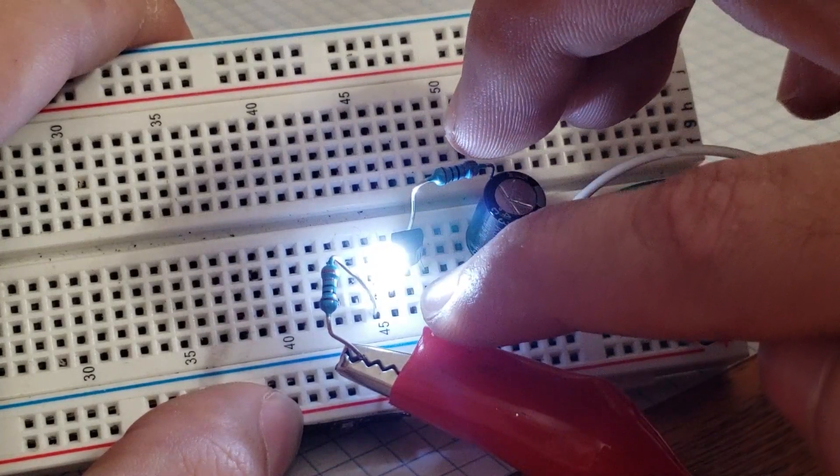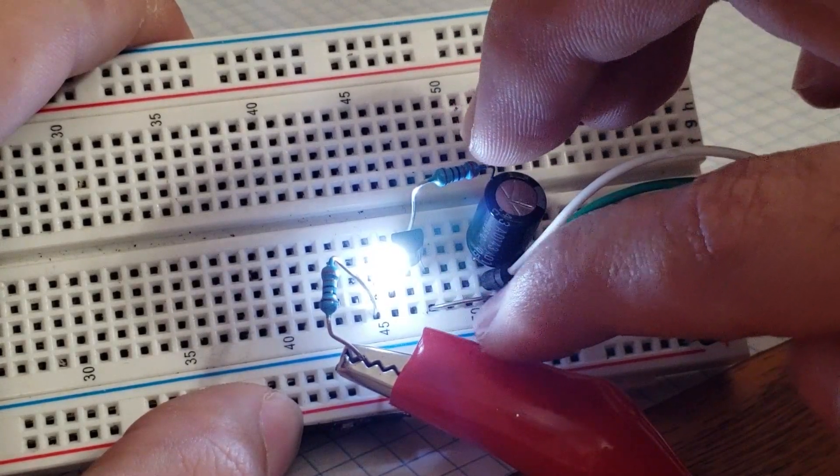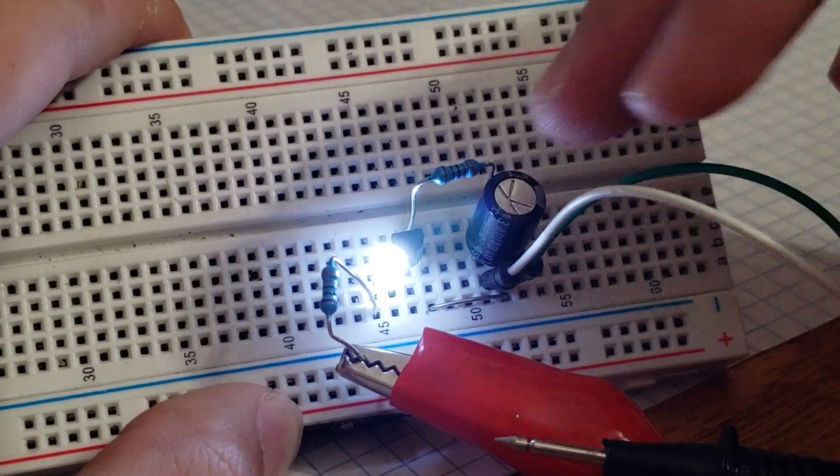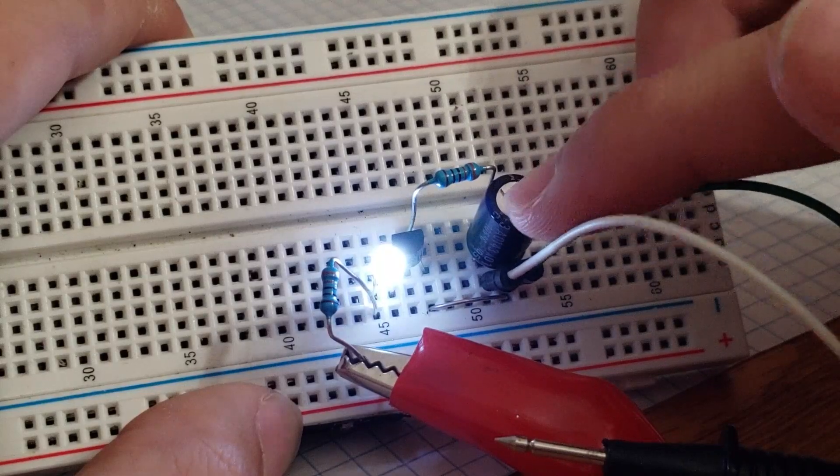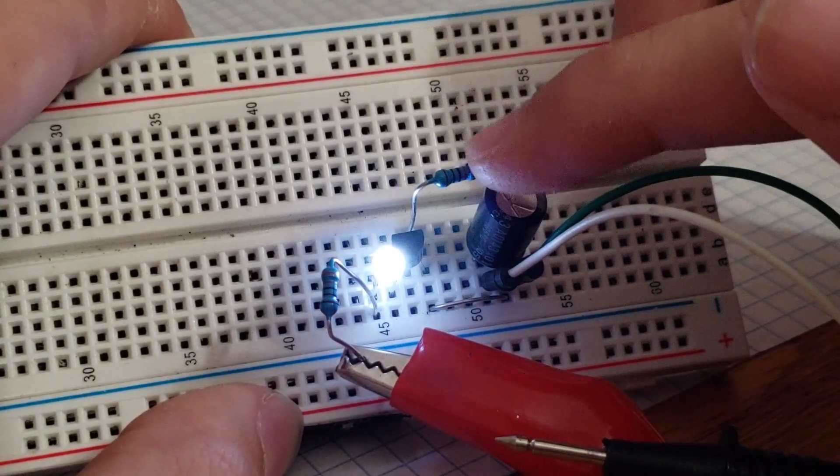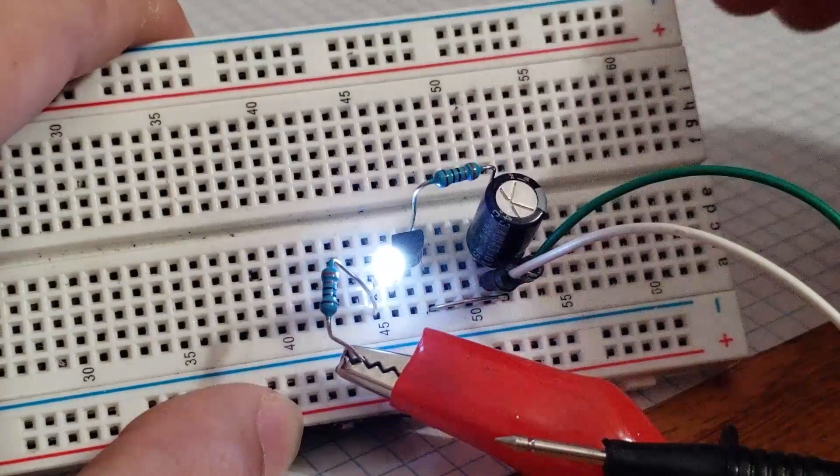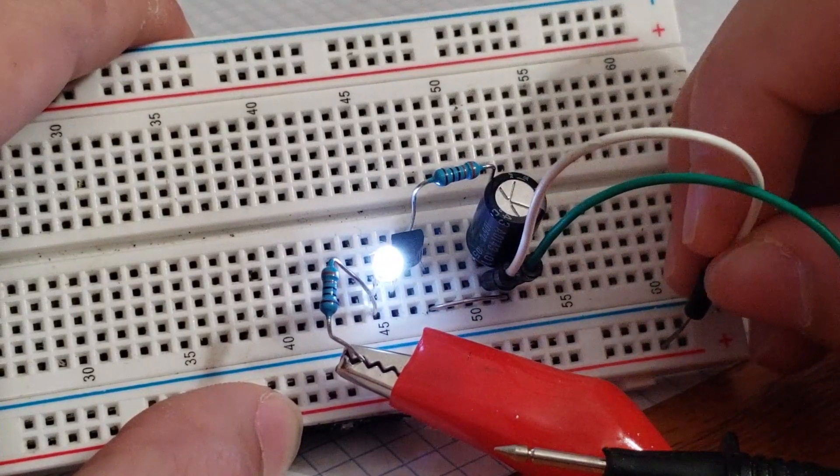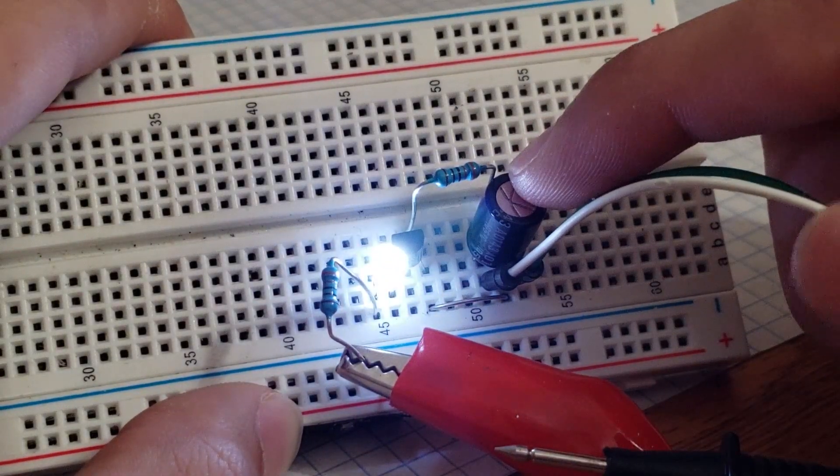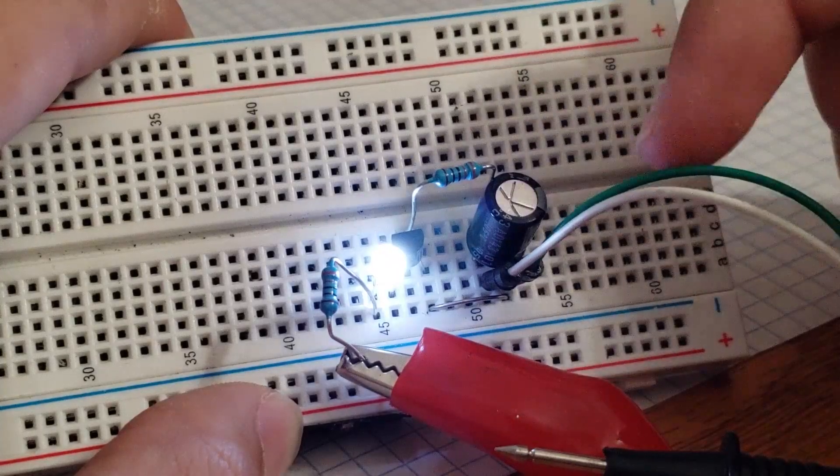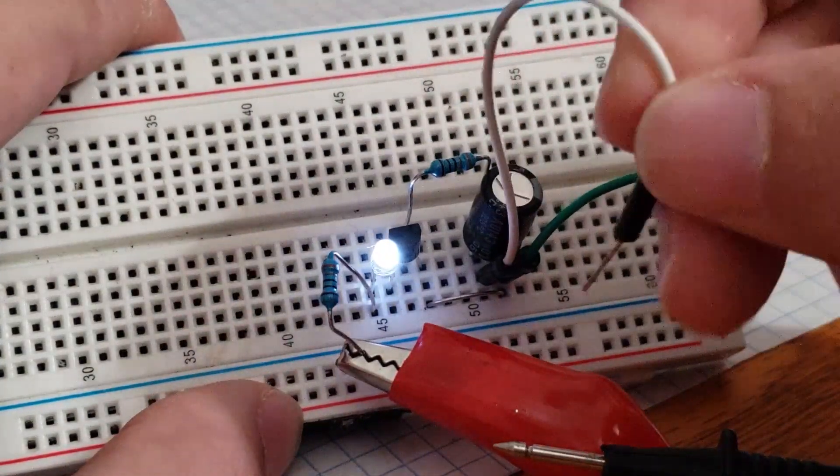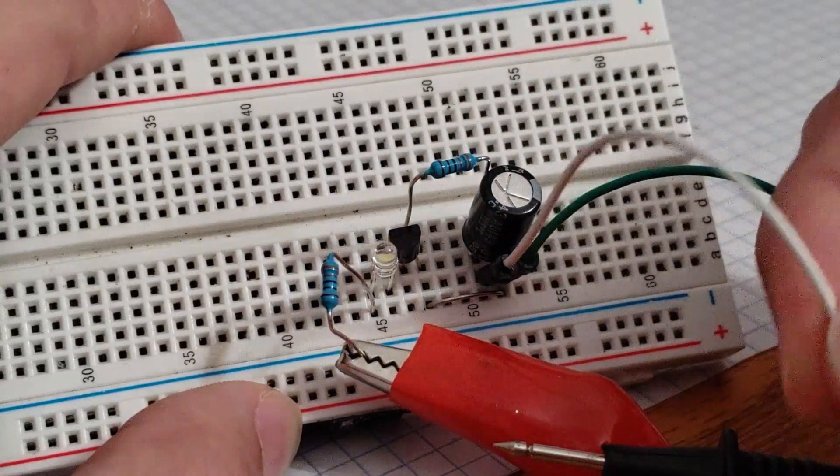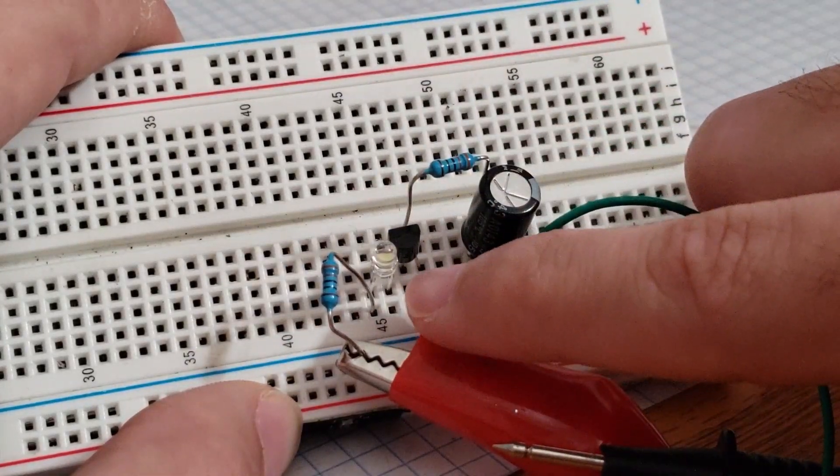Once you detach the power from the capacitor, it will still hold the charge but will slowly drain out through the resistor into the base of the transistor. You can see if I apply power again, the capacitor gets recharged and allows more current to flow through. Once the capacitor is discharged, I'll demonstrate by touching it to ground, then the LED will turn off.